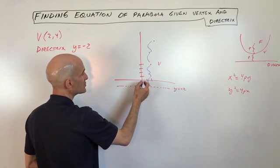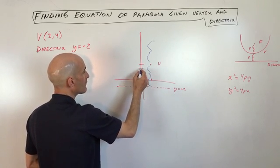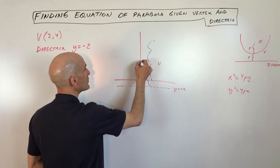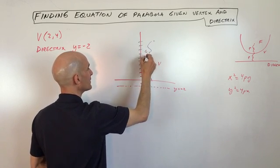So this distance is 1, 2, 3, 4, 5, 6. So this would also be 1, 2, 3, 4, 5, 6.